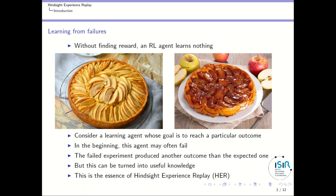If we consider a learning agent whose goal is to reach a particular outcome, in the beginning this agent may often fail, and if there is only a positive reward signal corresponding to the expected outcome, nothing happens. But the failed experiment produced other outcomes than the one the agent was expecting.